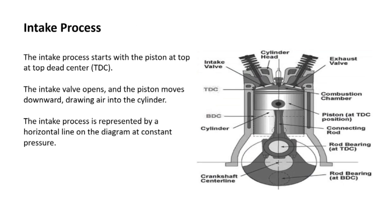The first process is the intake process. It starts with the piston at top dead center, moving from TDC to BDC. The intake valve opens and the piston moves downward, drawing air into the cylinder. The intake process is represented by a horizontal line on the diagram at constant pressure.